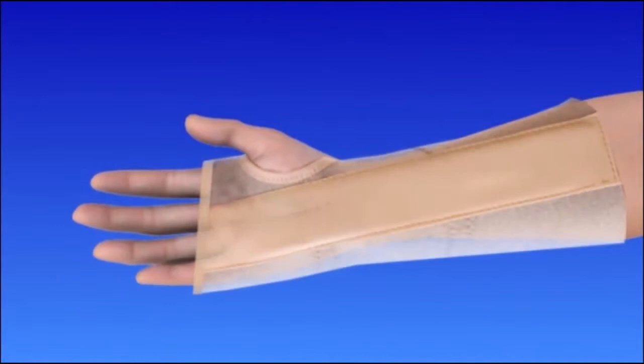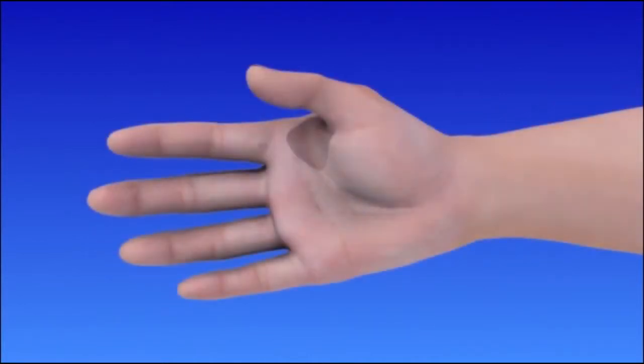Your wrist and hand will be wrapped in a soft dressing and you may wear a splint to provide support and promote healing. You will be able to move your fingers immediately after surgery and are encouraged to do so.